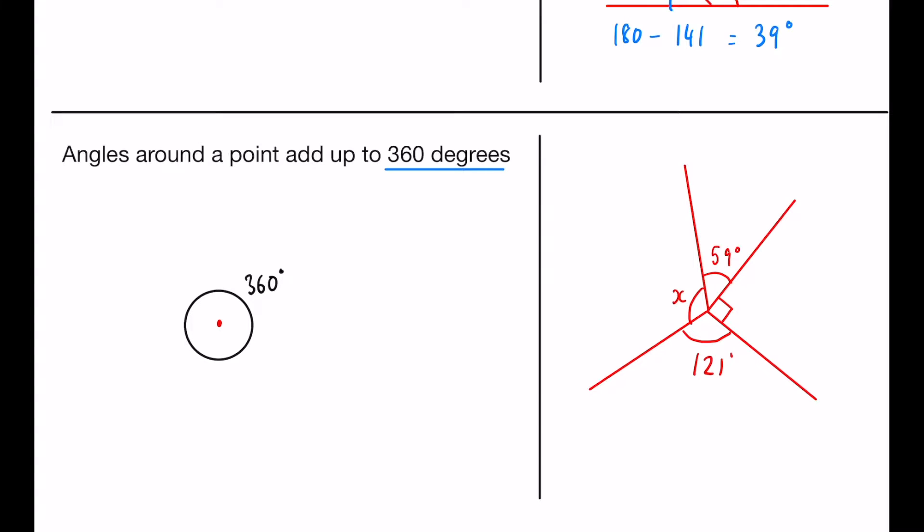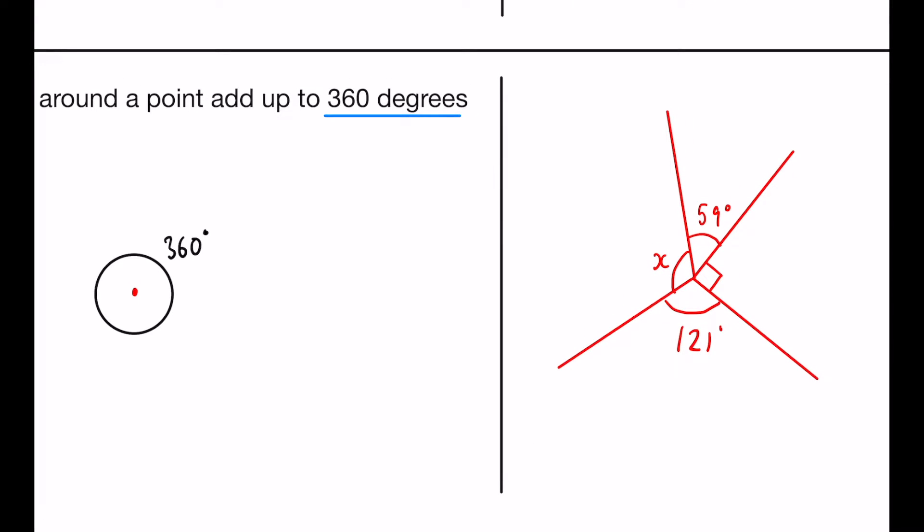So this one looks a little more involved. We have 59, we have 121, and some of you may recognize this square here. When we have a square as an angle, that always represents a right angle, so that would be 90. So 59 plus 121 plus 90 actually makes 270, and then we would have to do 360 take away 270, which actually equals 90. So x must equal 90.